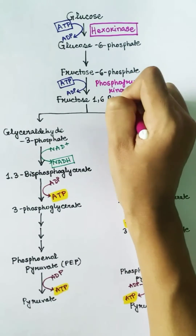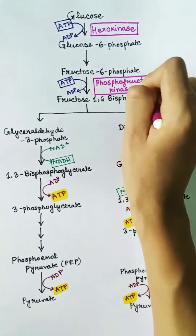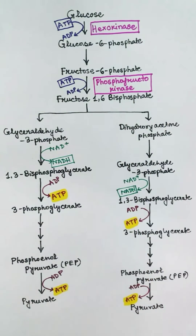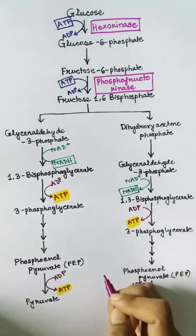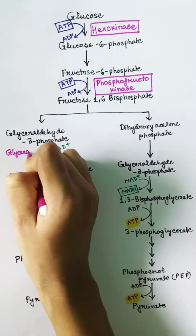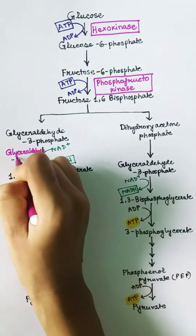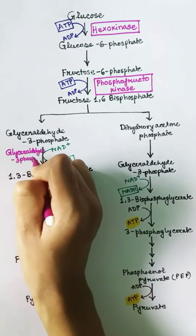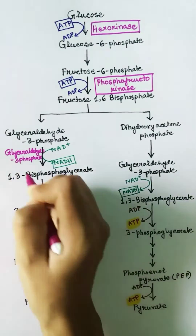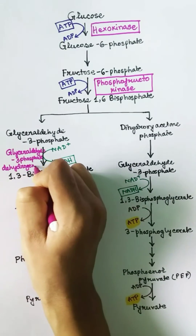The second enzyme is phosphofructokinase, involved in the second ATP consumption. For the NADH production, the enzyme is glyceraldehyde-3-phosphate dehydrogenase.